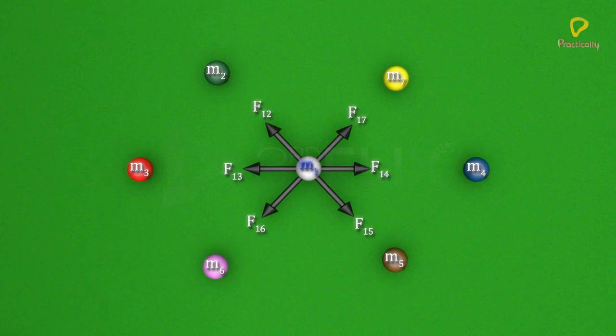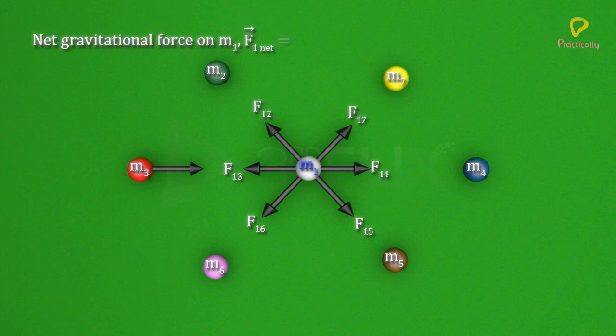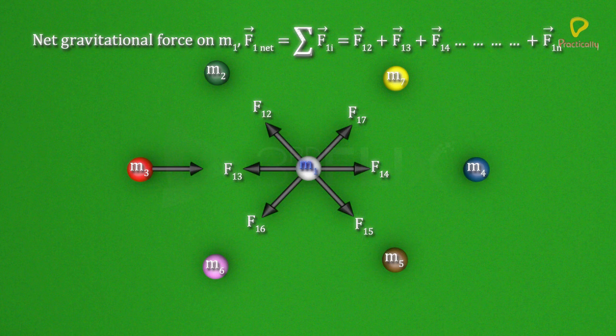Where F1 I is the force on the first object due to its I-th object. I varies from 2 to N in the summation.